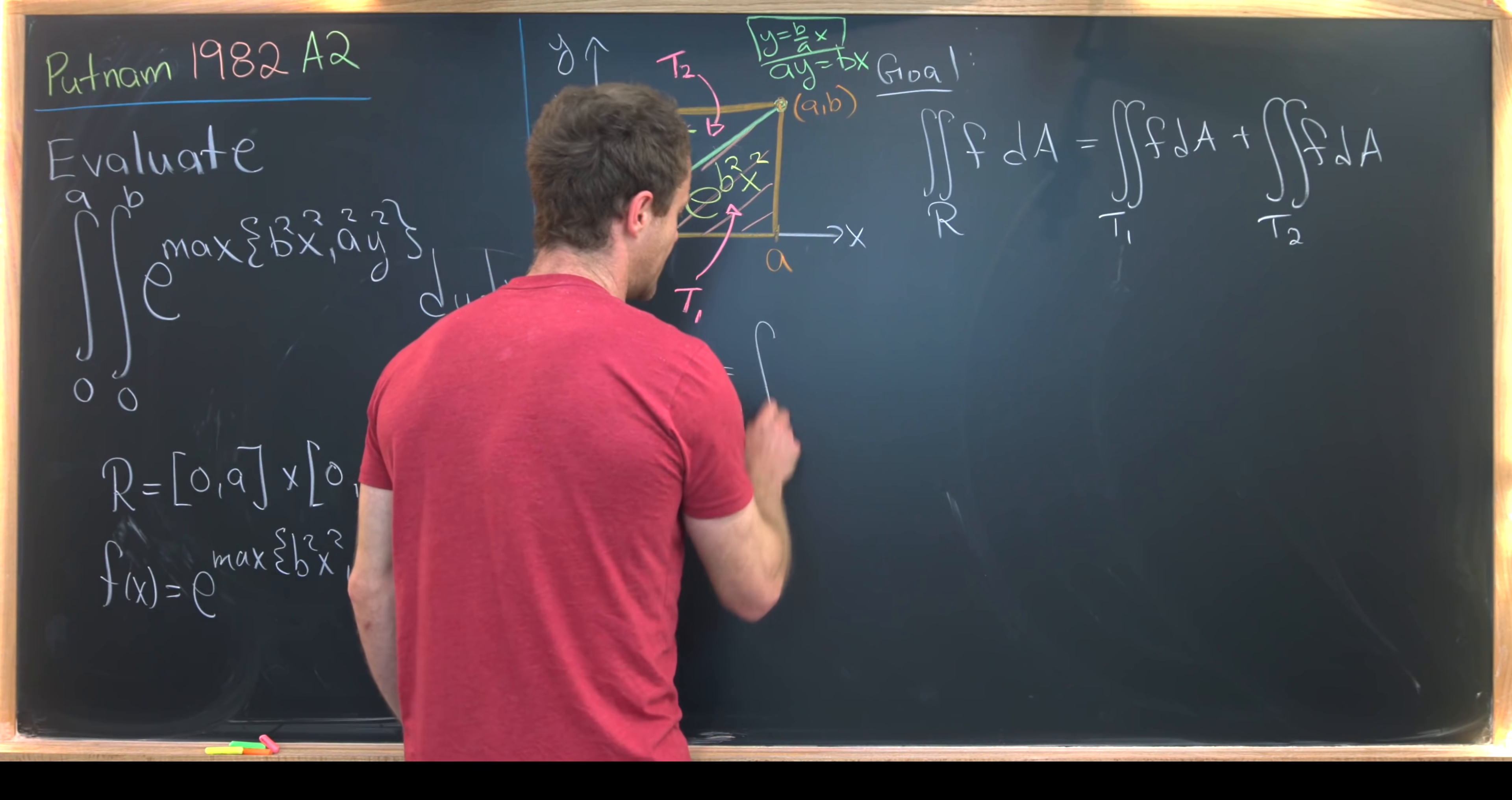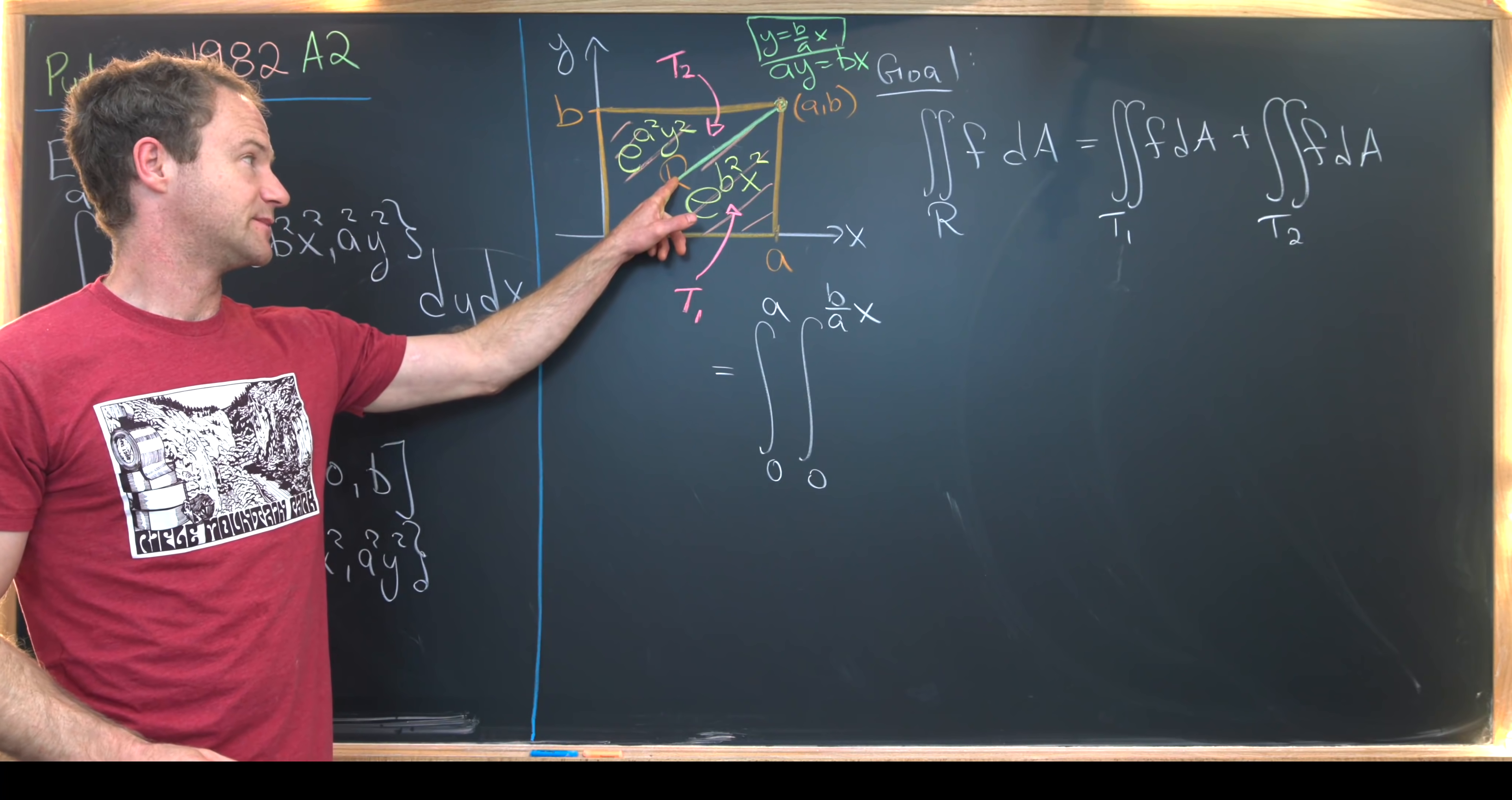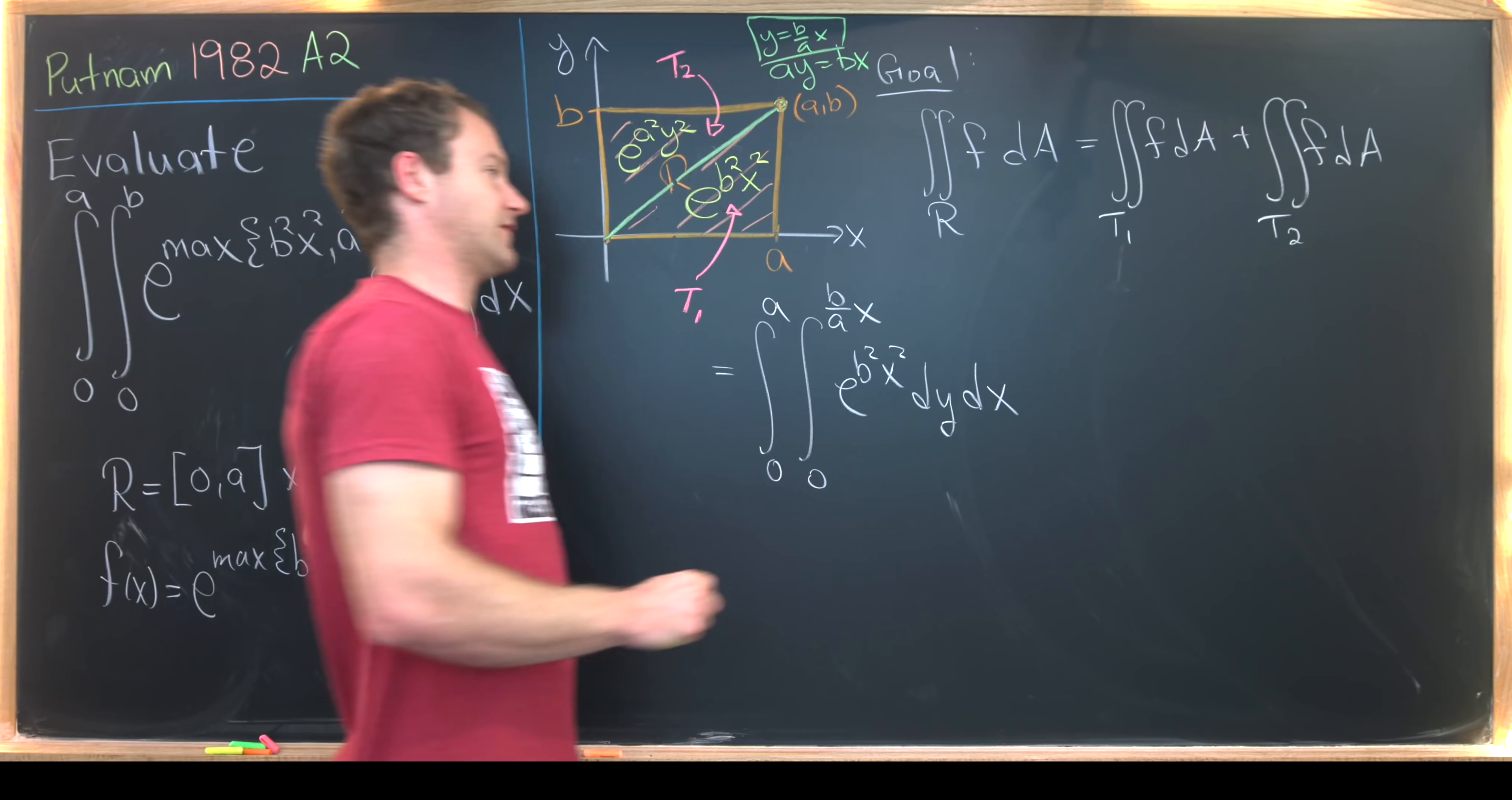So on triangle one, we can write that as the integral from zero to a. So we'll do the x integral on the outside. And then the integral from zero to b over a times x. So that's the y integral on the inside. So notice we go from the x axis up to this line right here. But that line is defined by that equation like we talked about before. Then f has this value here. So this is e to the b squared x squared. And then like I said, we're doing dy dx. Okay, nice.